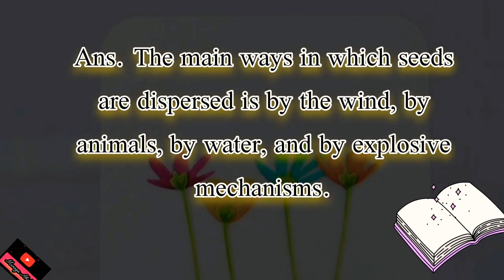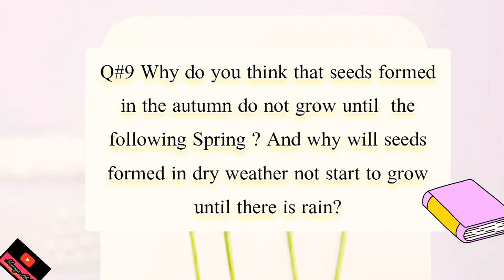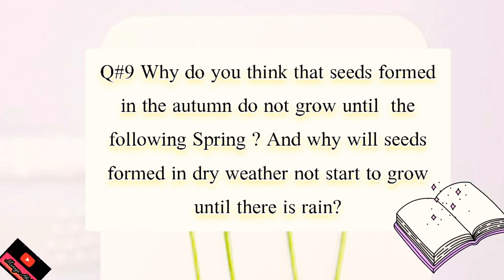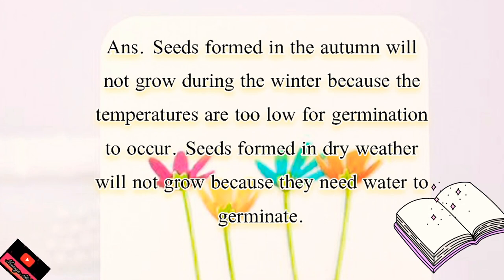Now write Question 9 in your journals very neatly: why do seeds formed in autumn not grow until the following spring, and why will seeds formed in dry weather not start to grow until there is rain? The answer is: seeds formed in autumn will not grow during winter because the temperatures are too low for germination to occur. Seeds formed in dry weather will not grow because they need water to germinate.